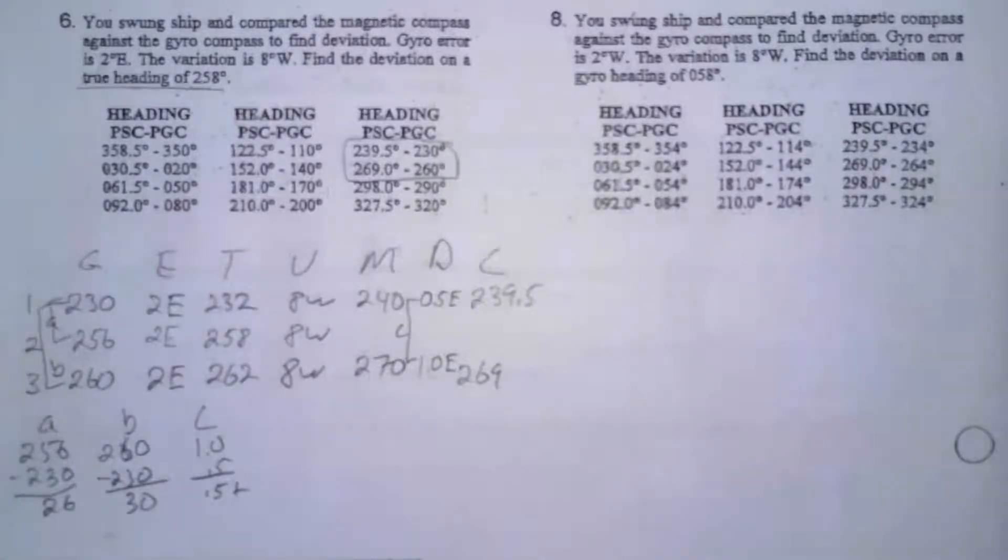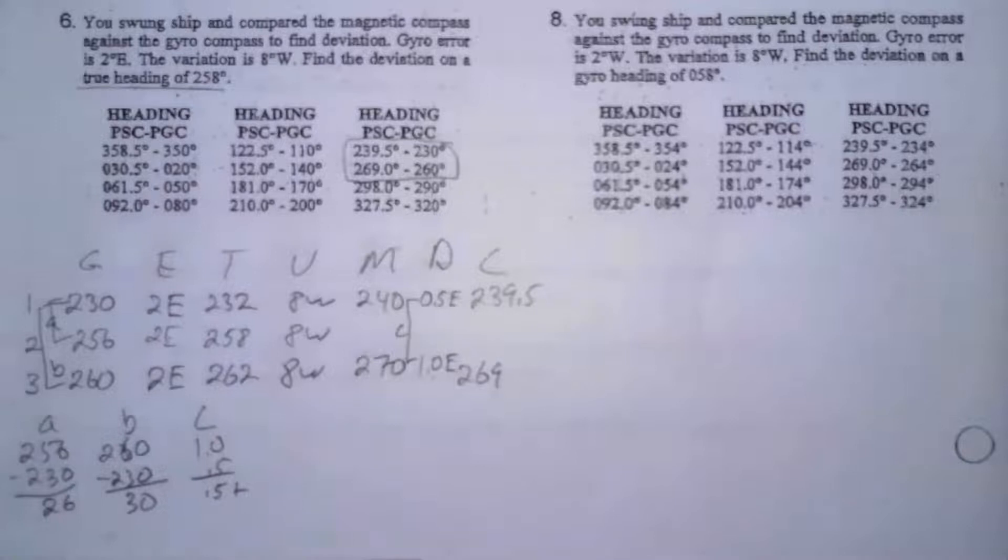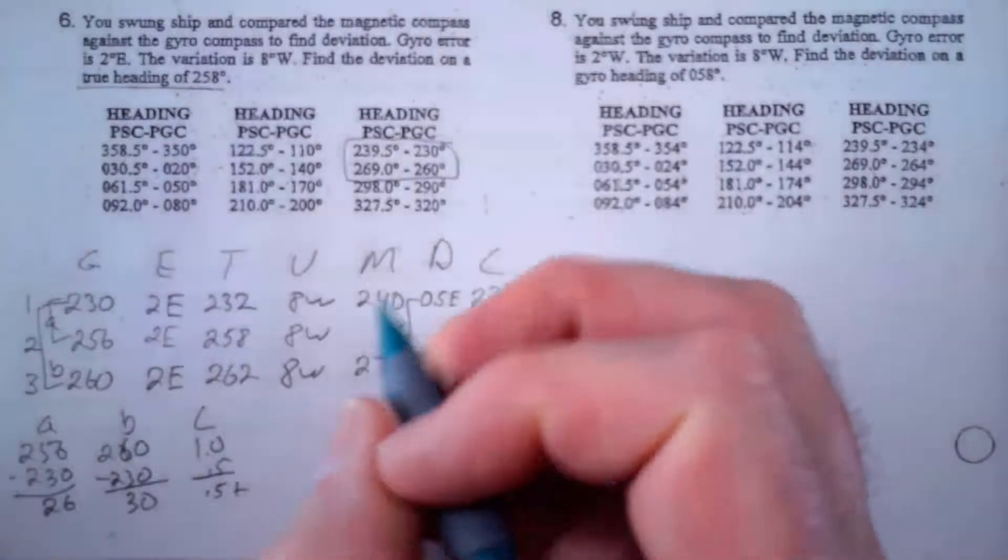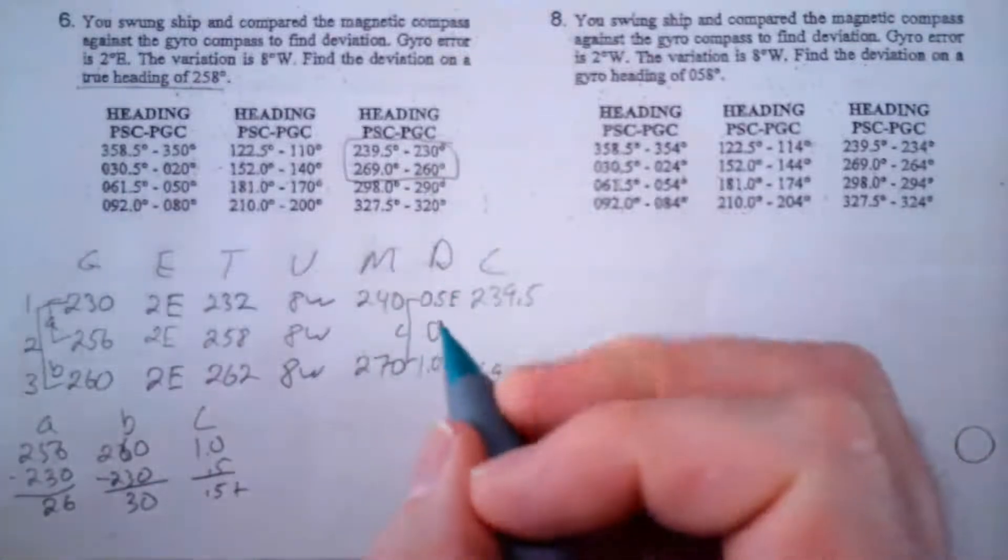So now I can set up my proportion and do this problem. I'm going to solve this two different ways. First I'm going to just solve it, I'm going to create my little proportion and I'm going to apply it to my deviation. And then for those of you who don't like to do it that way, you want to memorize a formula, I'm going to do it by a formula. So first thing is I want to know what my deviation is on this particular heading.